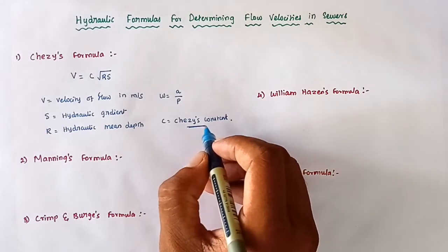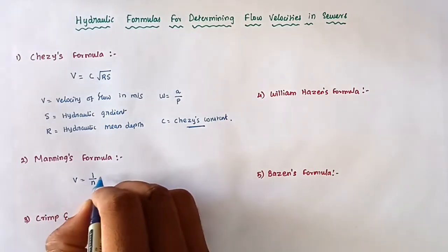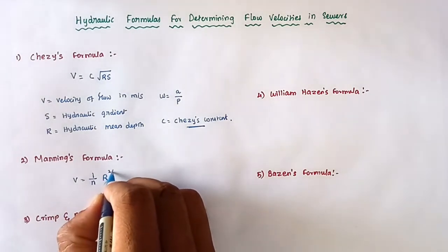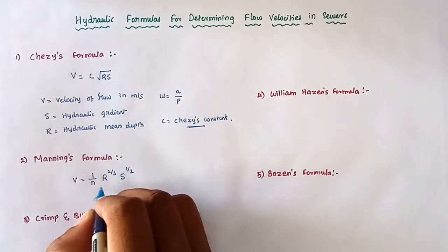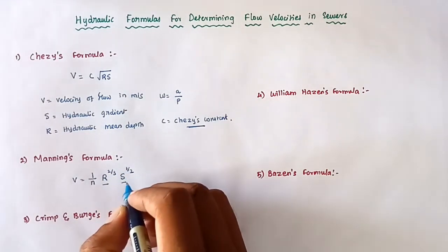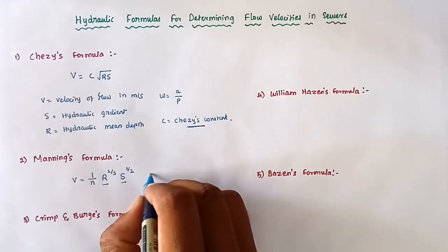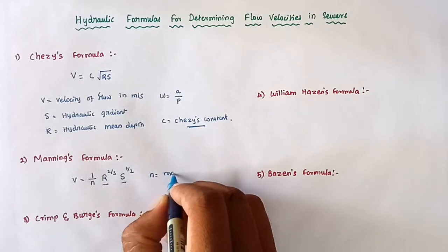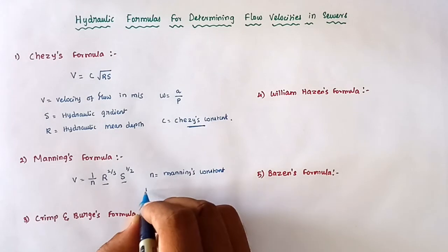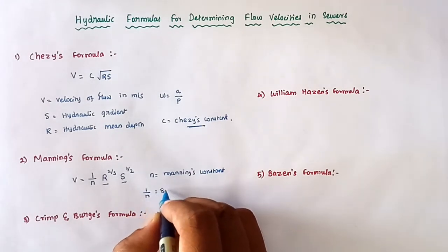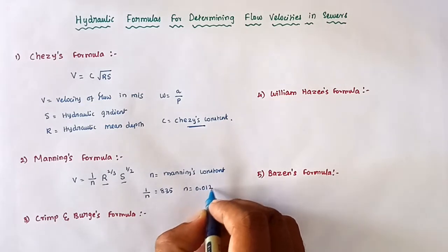The second formula is Manning's formula: V = (1/n) × R^(2/3) × S^(1/2). Here R is the hydraulic mean depth and S is the hydraulic gradient. The n is Manning's constant, where 1/n equals approximately 0.012 in many cases.